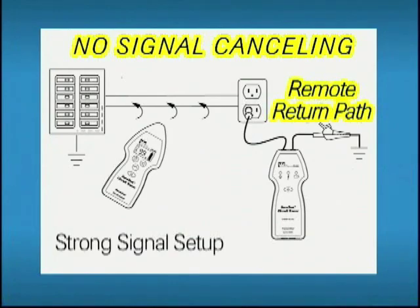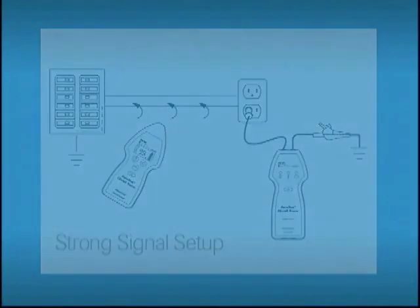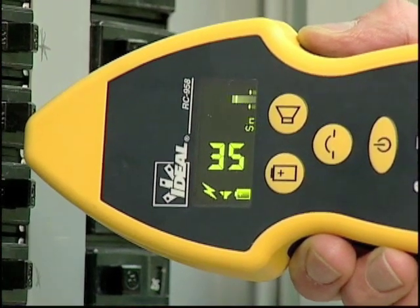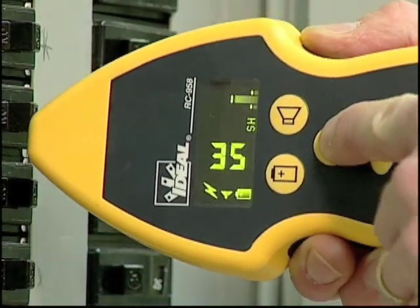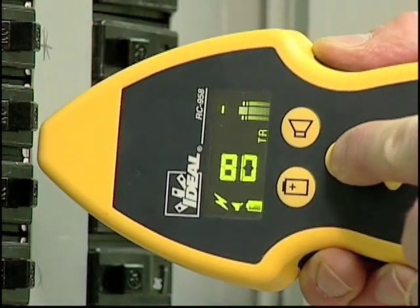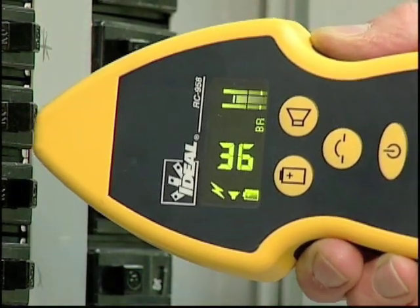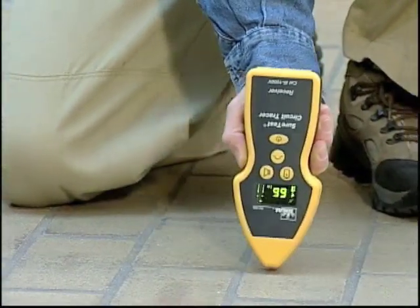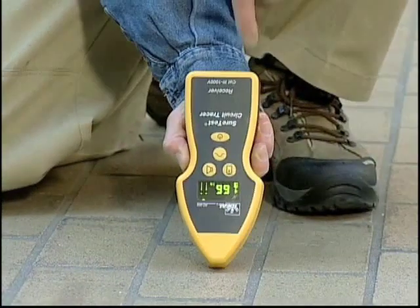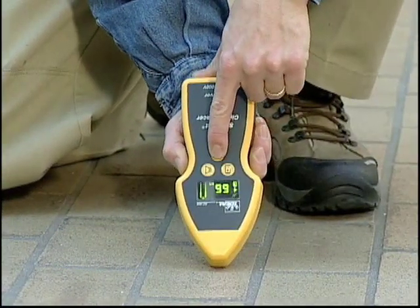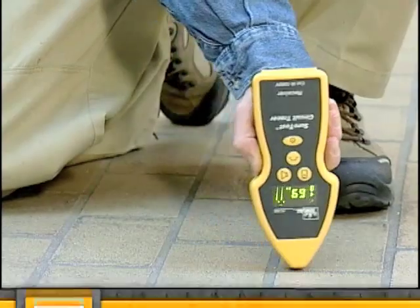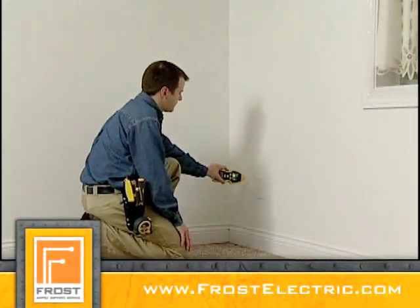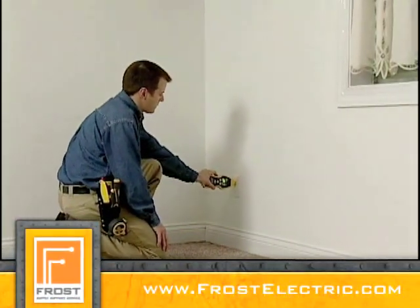Sure Test receivers offer four modes of sensitivity. In general, you should always start at the maximum setting until the receiver finds the circuit under test, then reduce the sensitivity mode if the meter pegs at 99 continuously. The indication of the received signal depends on how the receiver is pointed in relation to the source of the signal.